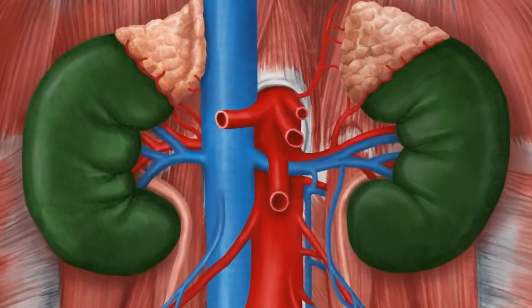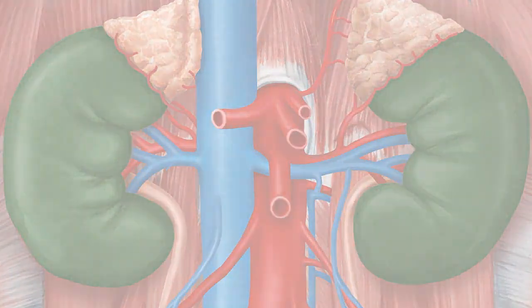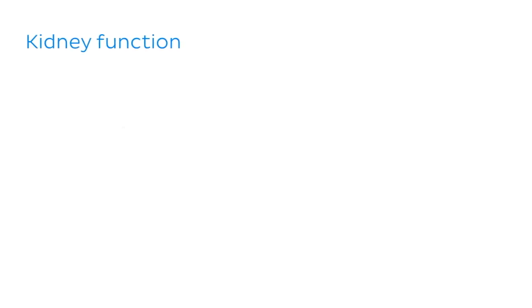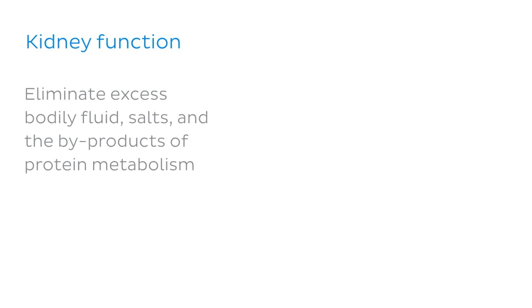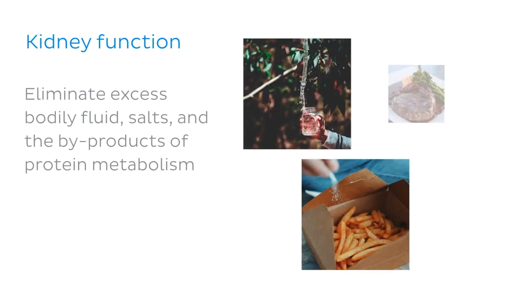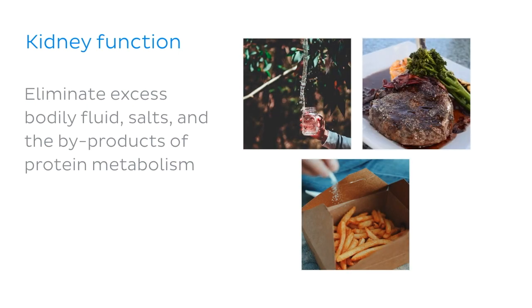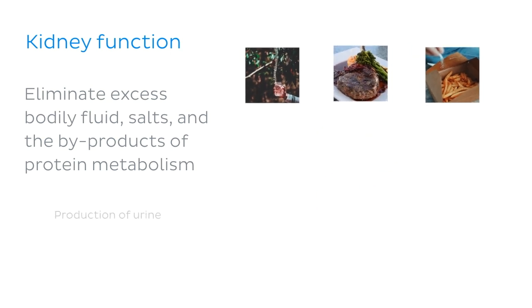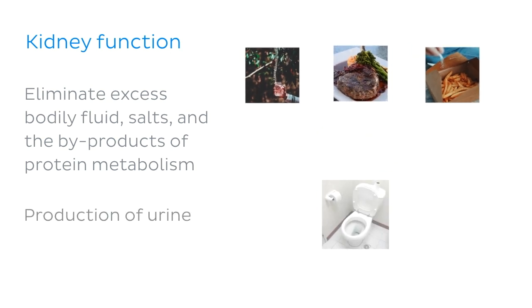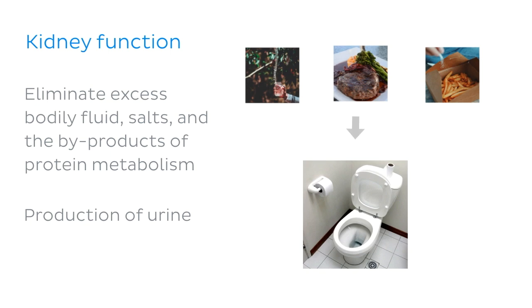Now that we've looked at the anatomy of the kidneys, let's explore the function. The main function of the kidney is to eliminate excess bodily fluid, salts, and the byproducts of protein metabolism. This results in the production of urine that is transported out of the kidneys through the ureters.